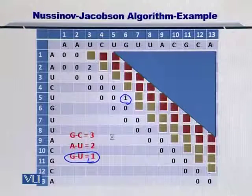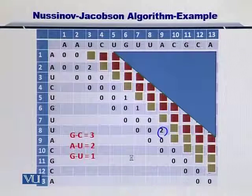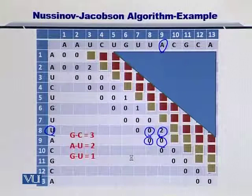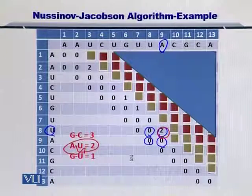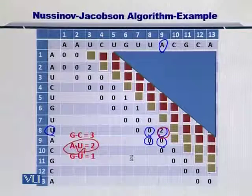In this case, we are only considering the energies resulting from the formation of the bond between these nucleotides, as the lower diagonals are already set to 0. So A and U would give 2, and the score is placed here. As you can see, the marks in blue are 0; however, the score 2 is in red. The score 2 is bigger than the three neighboring zeros, and therefore we continue with the 2.